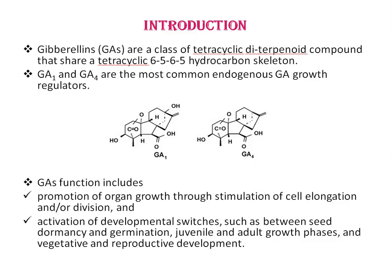Gibberellins are a class of tetracyclic diterpenoid compounds that share a tetracyclic 6-5-6-5 hydrocarbon skeleton. Currently, more than 125 different gibberellins have been identified from higher plants, fungi, or bacteria. GA1 and GA4 are the most common endogenous GA growth regulators.